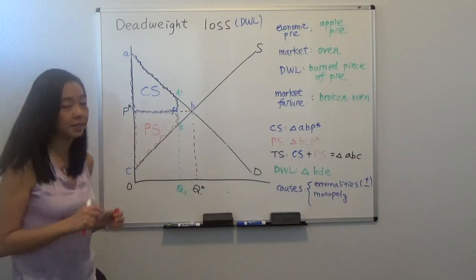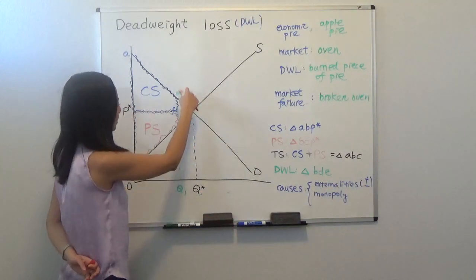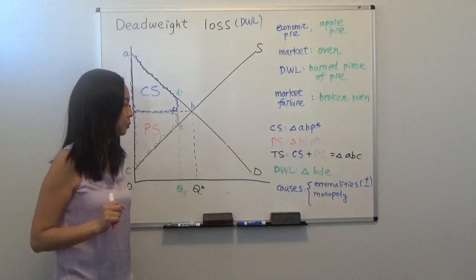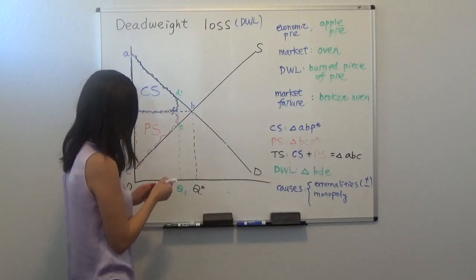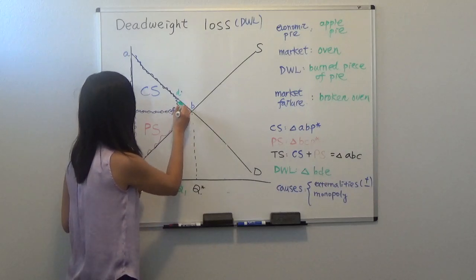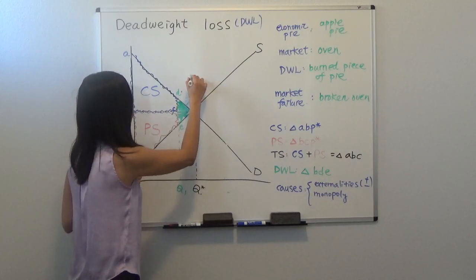So you notice a piece of economic pie? It's not there anymore, it's burned. That will be triangle D, B, E. That will be your deadweight loss. So nobody can enjoy that piece of pie because it's burned in the oven. Like that. So that is your deadweight loss.